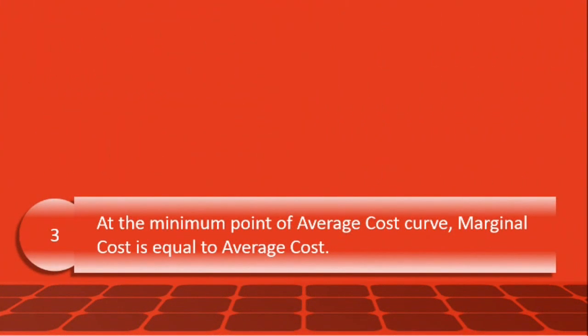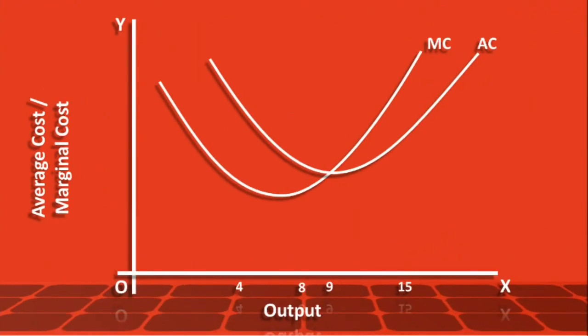The third relation is: at the minimum point of the average cost curve, marginal cost is equal to average cost. When output is 9 units, average cost is minimum. At this point, marginal cost is equal to average cost — marginal cost is 11 rupees and average cost is also 11 rupees. Both average cost and marginal cost are equal at the minimum point of the average cost curve.